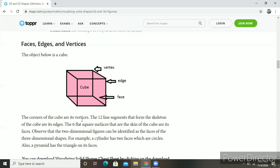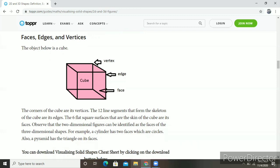In the corner where lines meet, the vertex, 12 line segments form the skeleton of the cube and its edges. The 6 flat square surfaces are the skin of the cube and the faces. A cylinder has two faces which are circles, and also a pyramid has faces. In the cylinder, there are two faces: one top and one bottom.